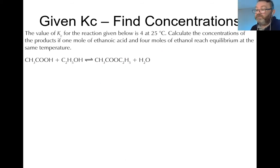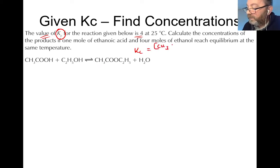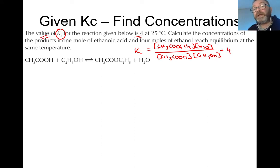Let's take an example. The value of Kc for the reaction given below is 4. Straight away, seeing Kc mentioned with a value, I immediately write down: Kc equals the concentration of CH₃COOC₂H₅ multiplied by the concentration of water, over the concentration of the acid multiplied by the concentration of the alcohol — and I set that equal to 4. When you're given Kc, you don't just write the expression; you write it and set it equal to the given value.